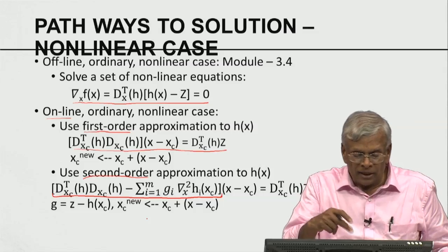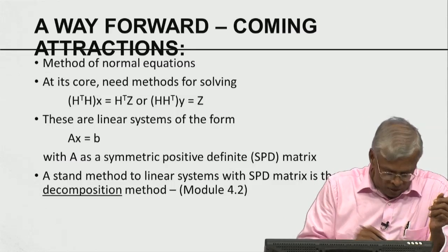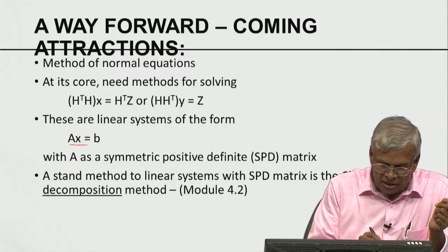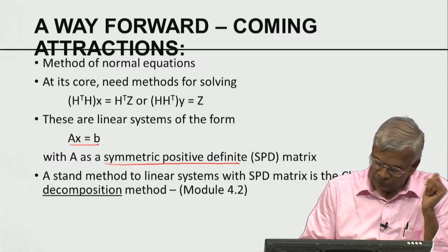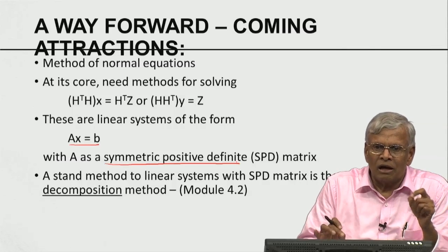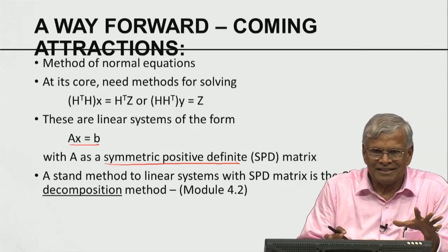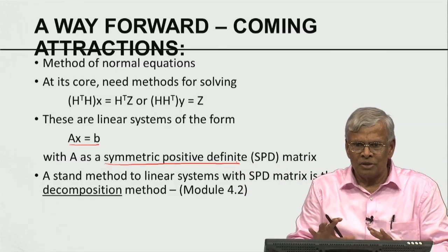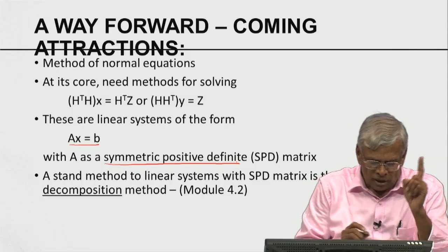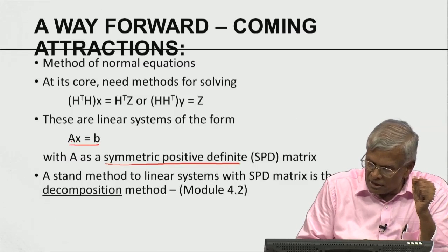You can see that no matter what formulation we have used, the method of normal equations at its core calls for solving linear systems of the form Ax = b where A is a symmetric positive definite matrix. That is the bottom line — no matter whether offline or online, linear or non-linear, well-conditioned or ill-conditioned — all these different formulations result in solving one simple problem: Ax = b where A is symmetric positive definite.